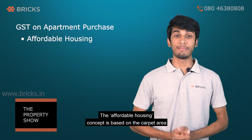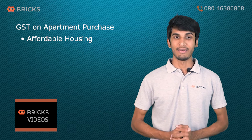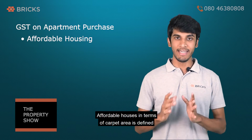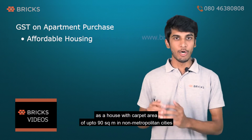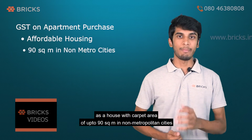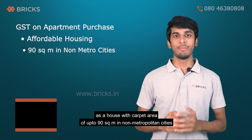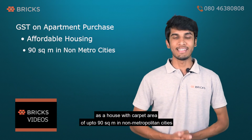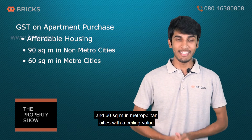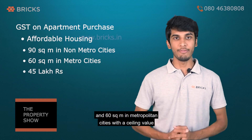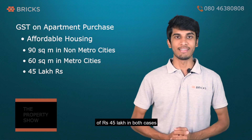The affordable housing concept is based on the carpet area. Affordable houses in terms of carpet area are defined as a house with a carpet area of up to 90 square meters in non-metropolitan cities and up to 60 square meters in metropolitan cities, with a ceiling value of Rs. 45 lakh in both cases.